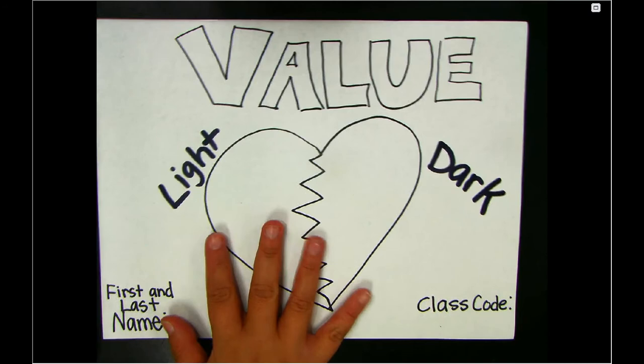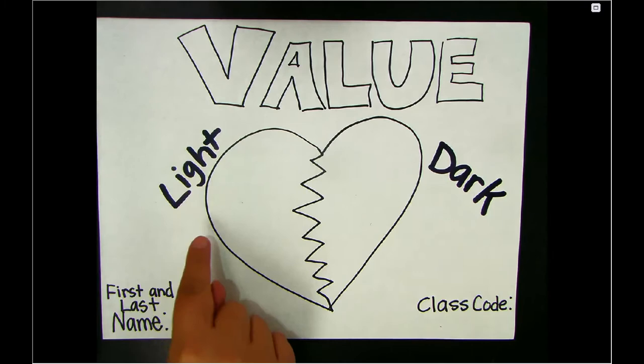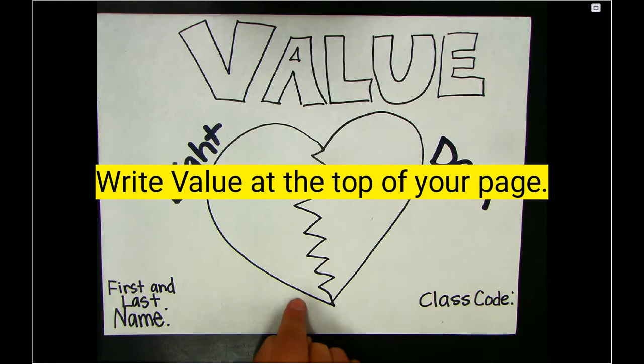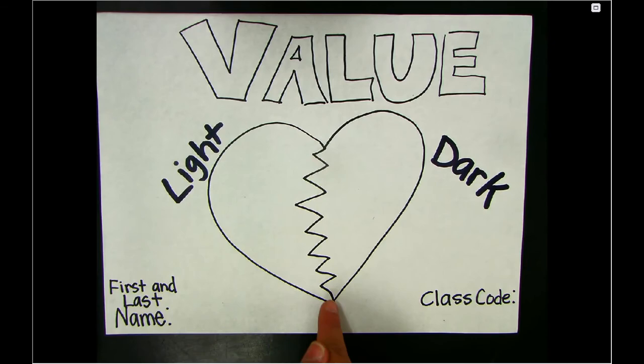What I would like for you to do is create a drawing similar to mine that you see on the screen. You'll need to have a 2D shape in the middle of your page along with 'value' at the top. After you draw that 2D shape — it could be a heart, a circle, a square, a triangle, a rectangle — whatever shape you can use where you can split it in half. That's what I want you to draw.